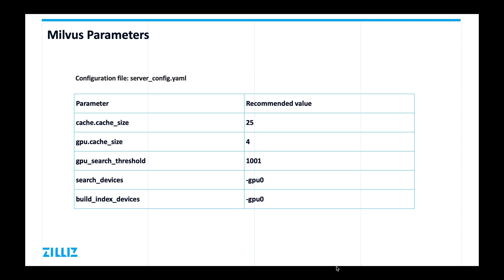The first parameter is cache size — it is the size of memory cache for indexes and searching. GPU cache size is the size of GPU memory cache. GPU search threshold is a threshold for the amount of queries required to activate solo GPU searching. And search devices or GPU devices are used for indexing.